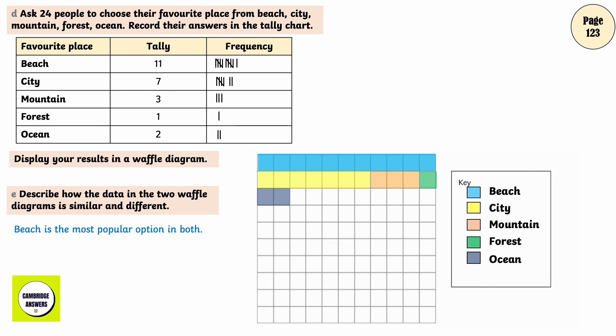Describe how the data in the two waffle diagrams is similar and different. Beach is the most popular option in both. City had more votes in the second graph.